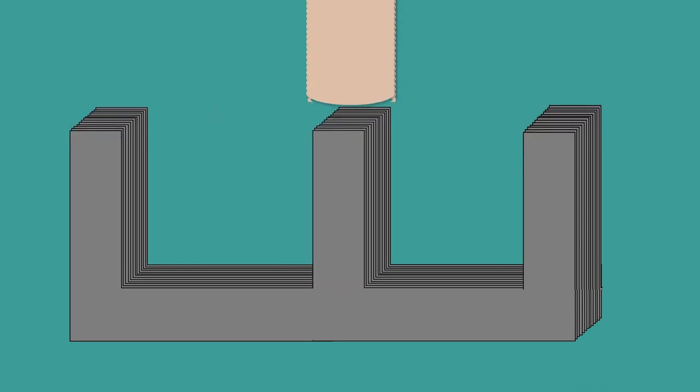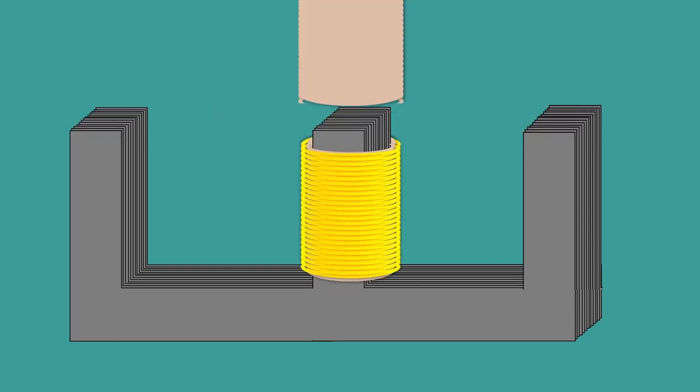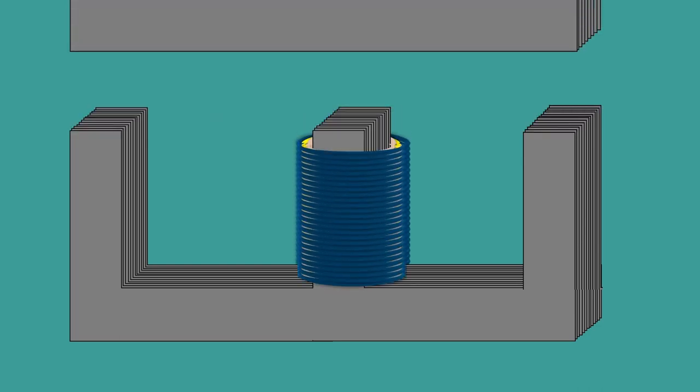In the shell type transformer, the core surrounds the winding. This means the primary and the secondary windings are placed on the central limb.